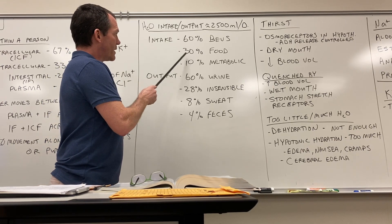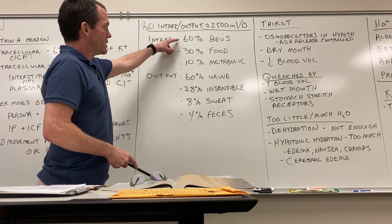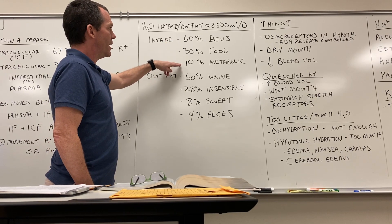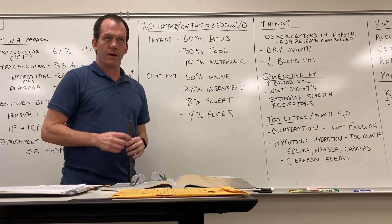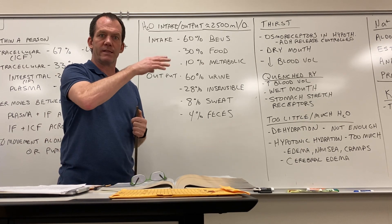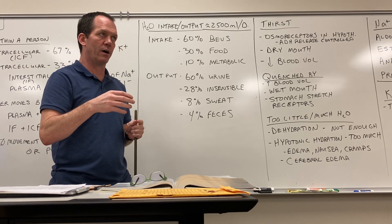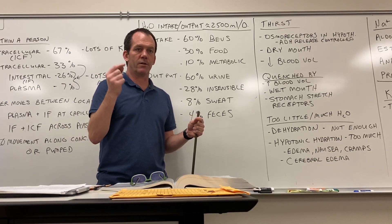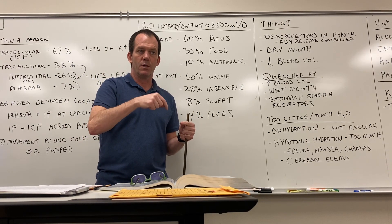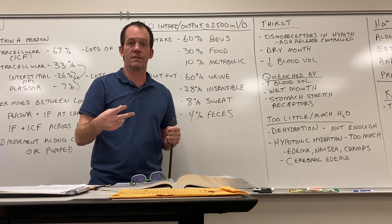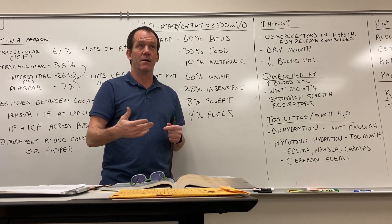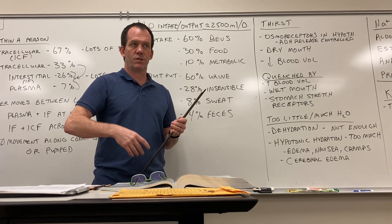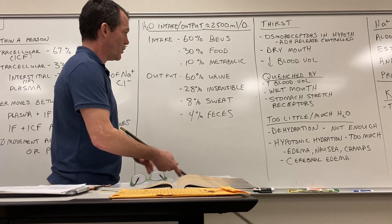Your water intake is roughly 60% from beverages, 30% from food, which contains water, and 10% is metabolic. That metabolic 10% comes from the end of cellular respiration, where in the electron transport chain you combine an oxygen atom with hydrogens and electrons to make water. So you're making about 10% of your daily water need just by making ATP.